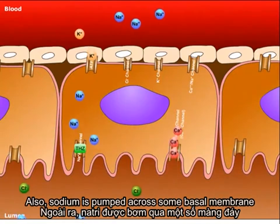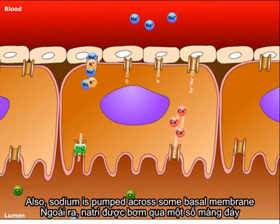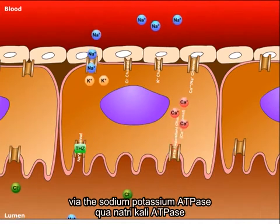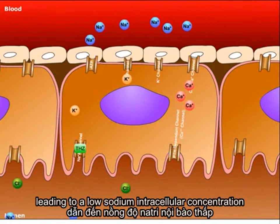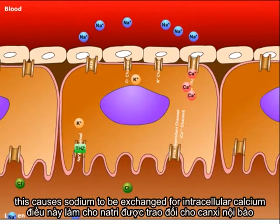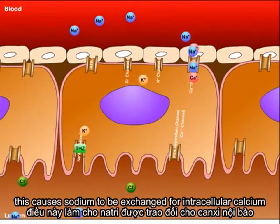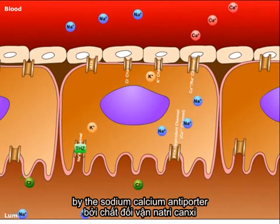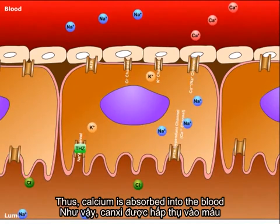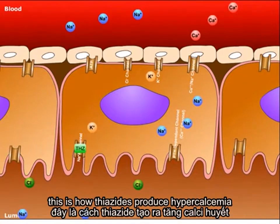Also, sodium is pumped across the basal membrane via the sodium-potassium ATPase, leading to a low intracellular sodium concentration. This causes sodium to be exchanged for intracellular calcium by the sodium-calcium antiporter. Thus, calcium is absorbed into the blood. This is how thiazides produce hypercalcemia.